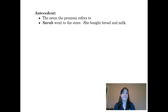The antecedent is the noun that the pronoun refers to. In our previous example, 'she' from 'she bought bread and milk' was the pronoun. Well, 'she' refers to Sarah, so that means Sarah is our antecedent.